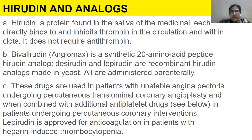Hirudin is a protein found in the saliva of medicinal leech. It directly binds to and inhibits thrombin in the circulation and within clots — it does not require antithrombin. Then we have bivalirudin, a synthetic 20-amino acid peptide hirudin analog. Desirudin and lepirudin are recombinant hirudin analogs made in yeast and are administered parenterally. These drugs are used in patients with unstable angina pectoris undergoing percutaneous transluminal coronary angioplasty, and when combined with additional anti-platelet drugs in patients undergoing percutaneous coronary intervention. Lepirudin is approved for anticoagulation in patients with heparin-induced thrombocytopenia.